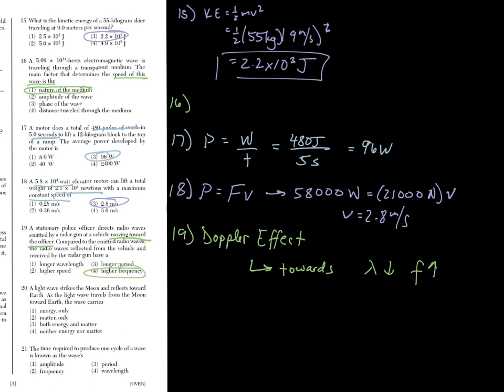A light wave strikes the moon and reflects toward the earth as a light wave travels from the wave carries energy only. Waves carry only energy. Number 21 is a definition kind of question. The time required to produce one cycle of a wave is known as the wave's period. So period is basically seconds per wave.